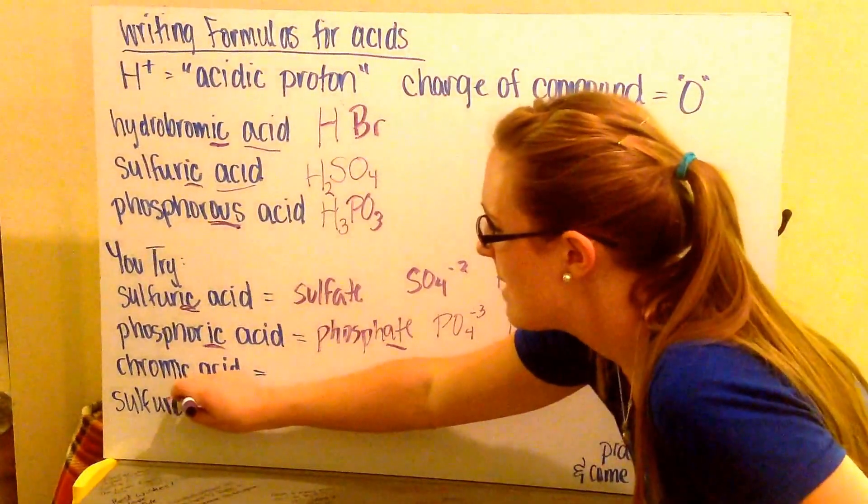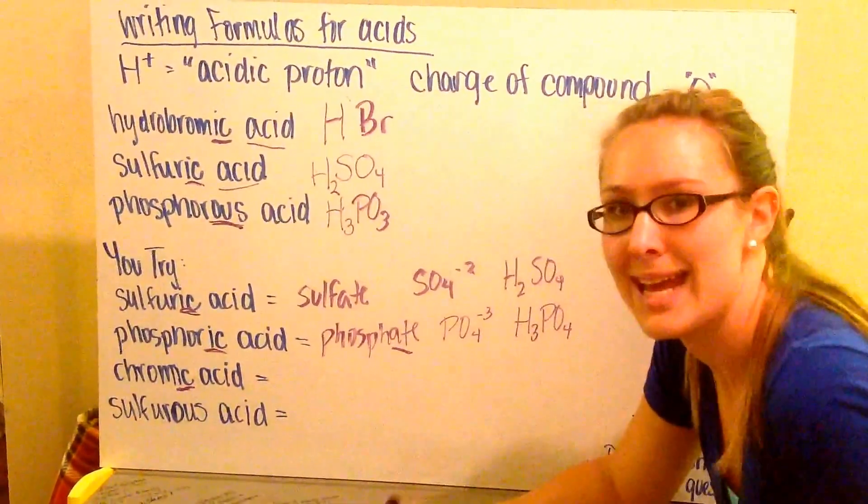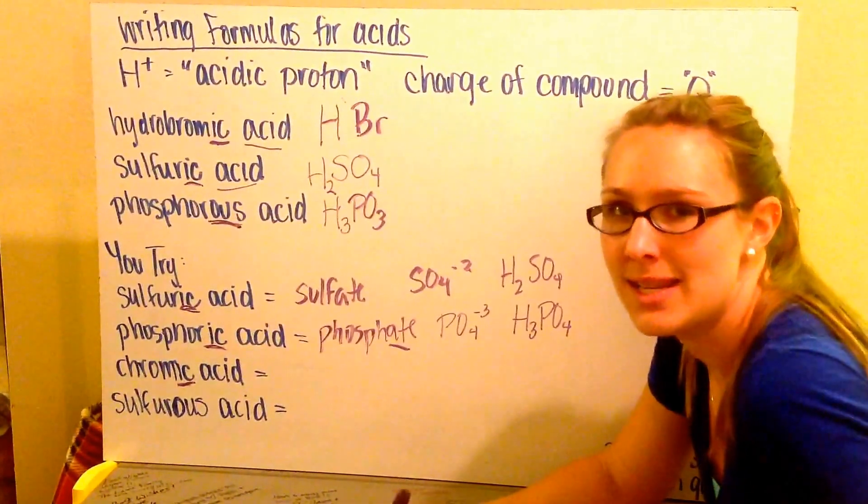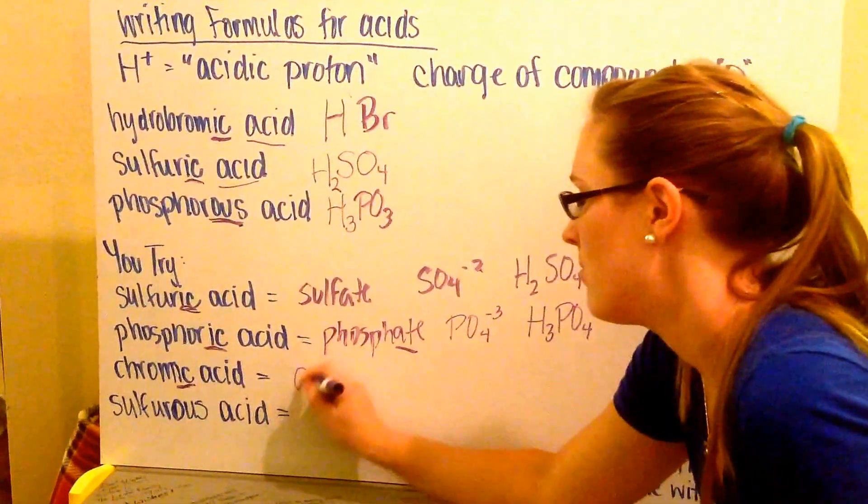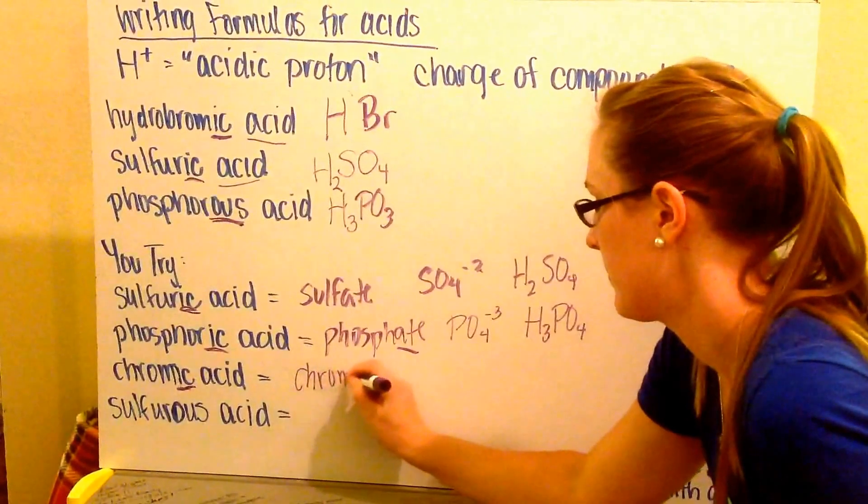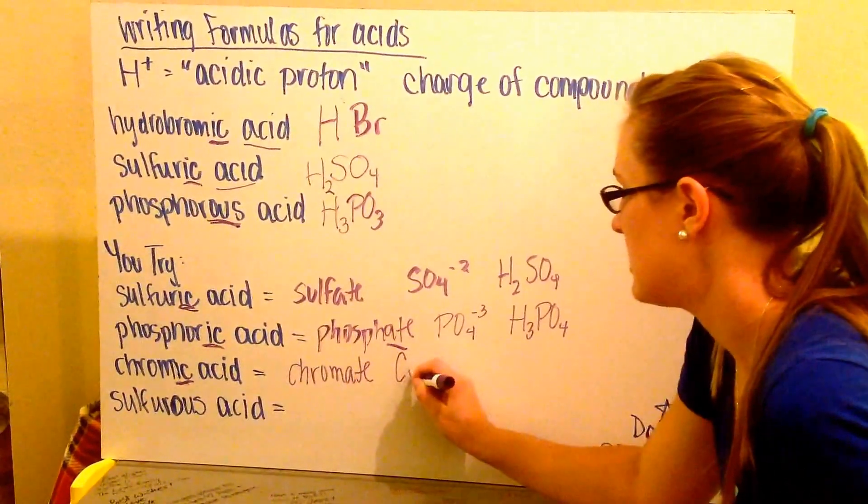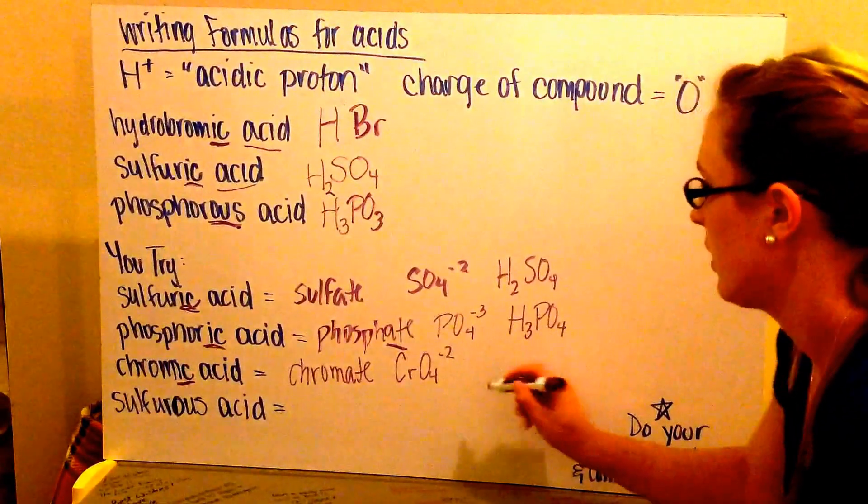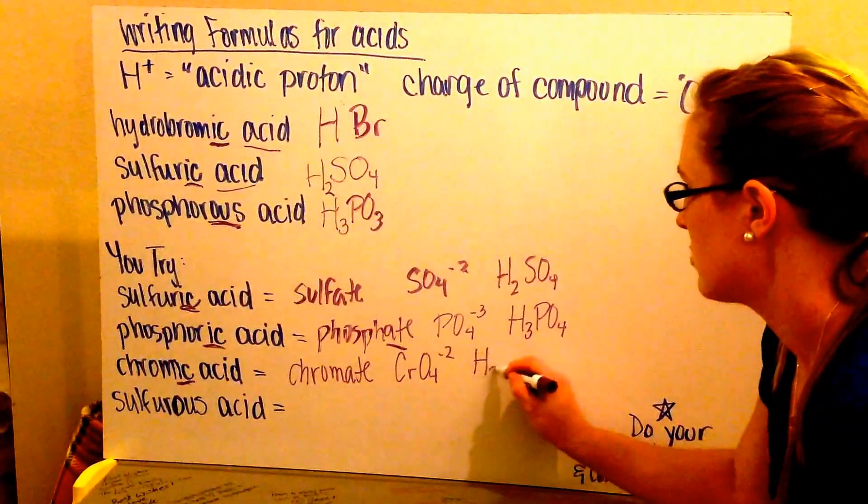My next one, chromic acid, again that IC ending, means I had to have an ATE ion. If I had ATE in acid, it would be icky. So I have chromate. Remember that chromate is CrO4 minus 2. That means I need to have two hydrogens in front.